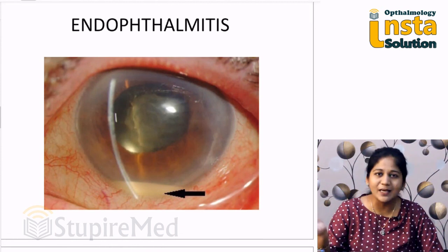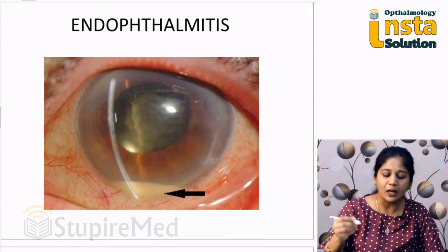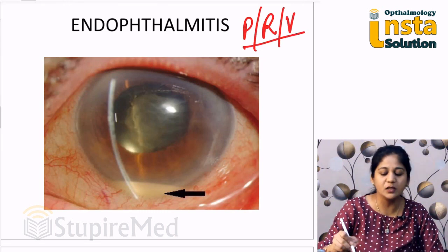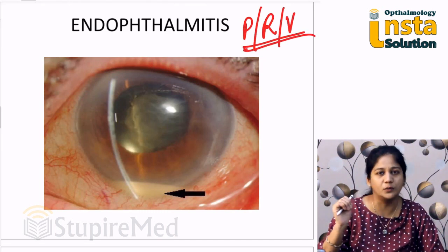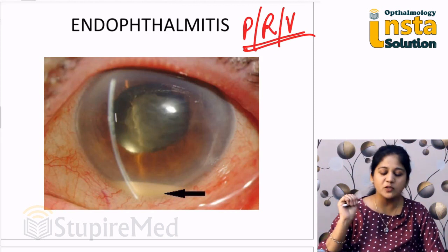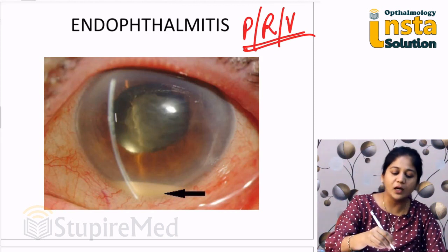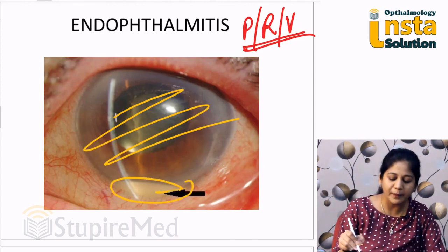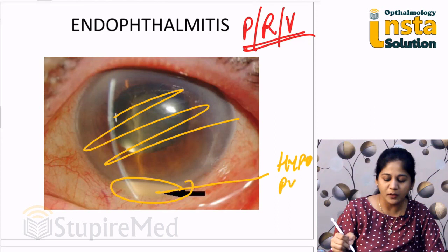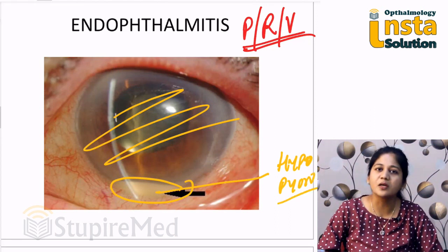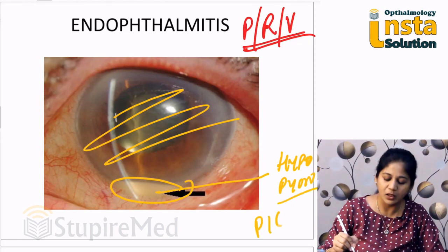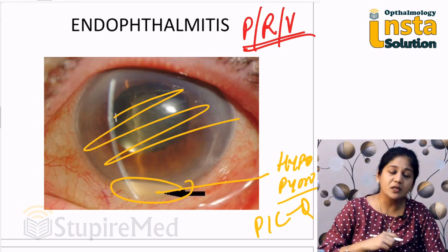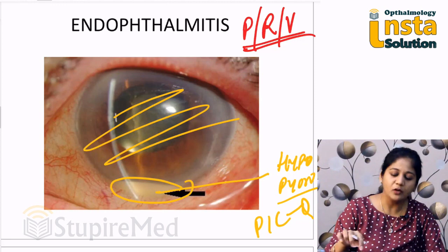When an endophthalmitis patient presents with an early presentation — usually two to three days after surgery — they come with pain, redness, and sudden drop in vision. These three are the danger symptoms. Classically on examination, the cornea appears edematous (lazy cornea), and the pathognomonic finding is hypopyon — pus in the anterior chamber — which itself is an individual picture question.